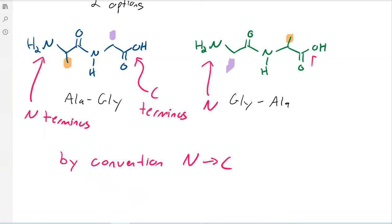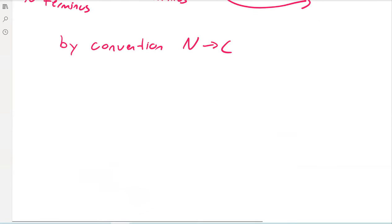Right. And then same thing. Here's the N. Here's the C. And it goes from N to C. And of course, that's just a dipeptide. So you can have way more structures. So let's take a look at a tripeptide. In this case, we'll do alanine, glycine, and then cysteine.